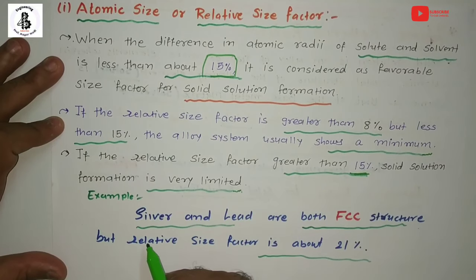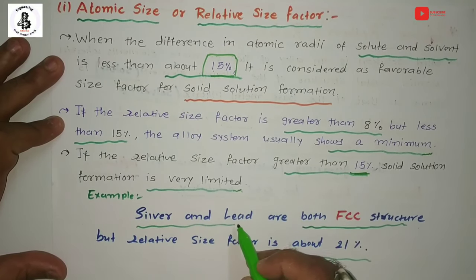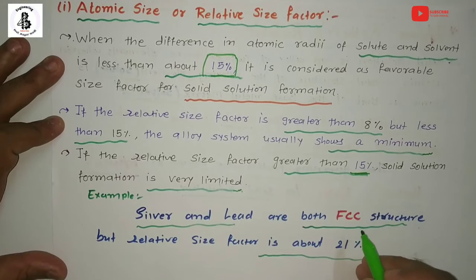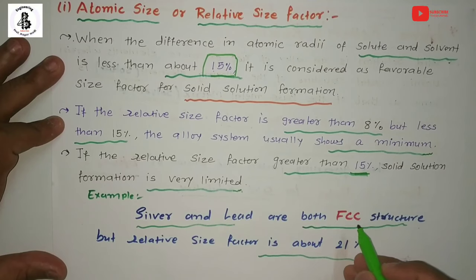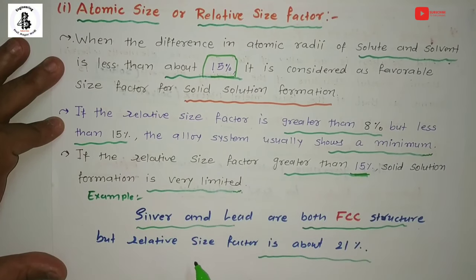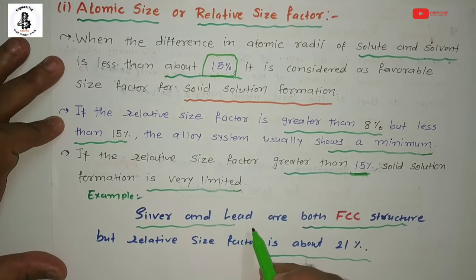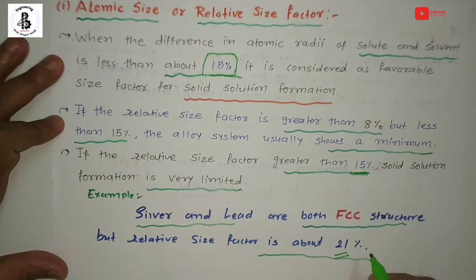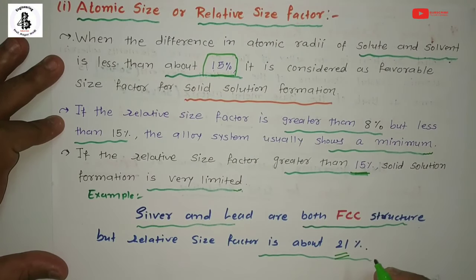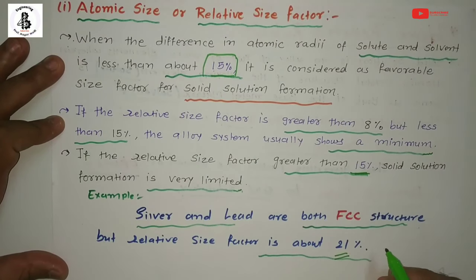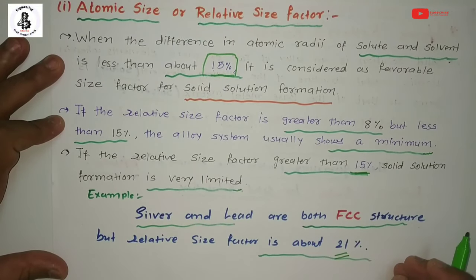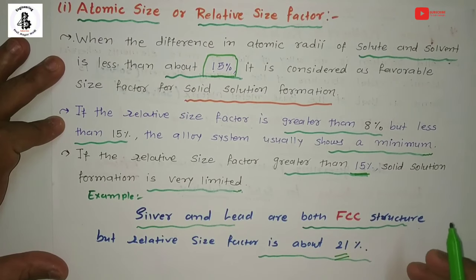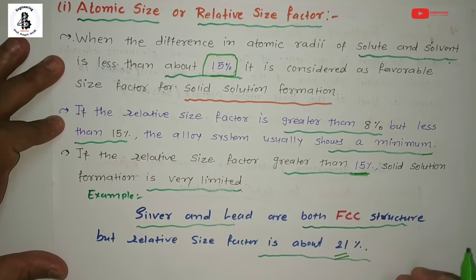For example, silver and lead both have an FCC (face-centered cubic) structure, but the difference in atomic size between silver and lead is about 21%. Therefore, they have no solubility in the solid state to form a new solid solution material. This illustrates the atomic size factor, or relative size factor, as the first governing condition.